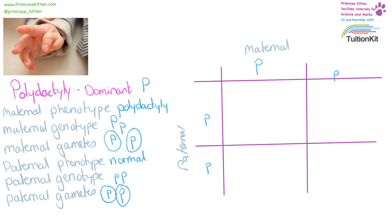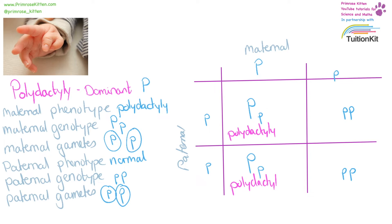The maternal gametes go down: capital P down, capital P down, lowercase p, lowercase p. The paternal gametes go across: lowercase p, lowercase p, lowercase p, lowercase p. Because it's a dominant disease, we only need one copy of the gene to have polydactyly. Two babies will have polydactyly and two babies will be normal. So there is a 50% chance in this circumstance that the baby will have polydactyly.